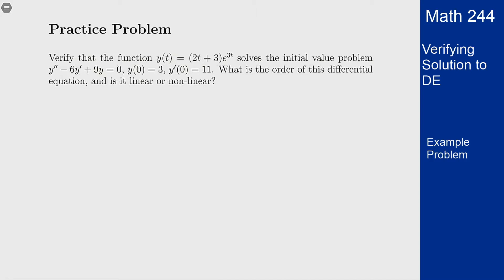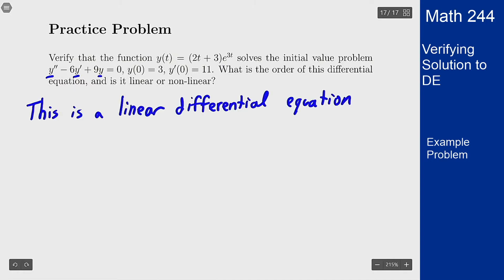We can do that last part first. This is a linear differential equation because the unknown function y and its derivatives all show up here only as linear terms. They're not raised to powers, they're not multiplied by each other, there's no other function going on. So this is a linear differential equation and it is second order because the highest derivative that we see is the y double prime.